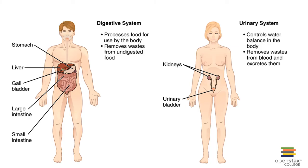The digestive system is composed of the salivary glands, esophagus, stomach, small intestine, large intestine, liver, and gallbladder. It takes in nutrients, breaks them down, and allows absorption of food so that cells acquire nutrients, minerals, vitamins, and water, while eliminating waste as fecal material. The urinary system is composed of the kidneys, ureters, urinary bladder, and urethra. It filters the blood to remove nitrogenous waste products, eliminate excess water, salts, and wastes, while controlling pH and electrolyte balance.